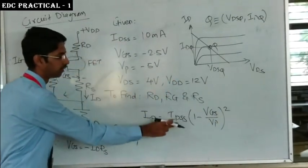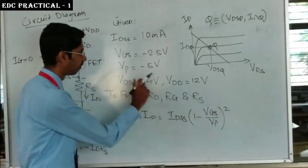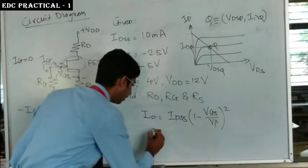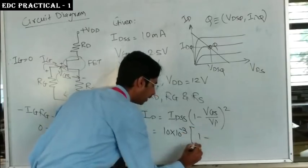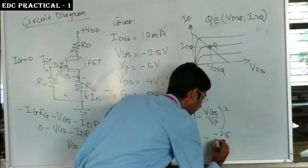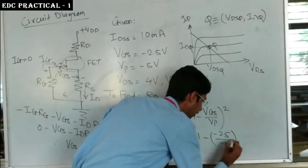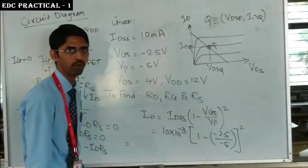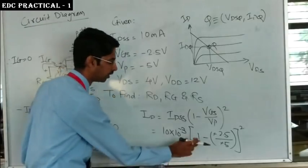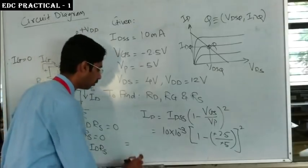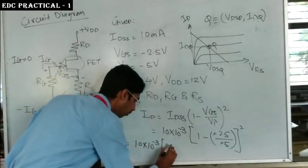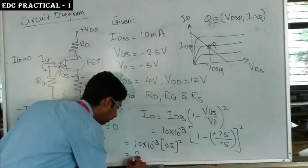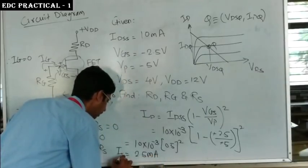The formula is: ID = IDSS × (1 − VGS/VP)². Substituting: ID = 10×10⁻³ × (1 − (−2.5)/(−5))² = 10×10⁻³ × (1 − 0.5)² = 10×10⁻³ × 0.25 = 2.5 mA. So ID = 2.5 mA.